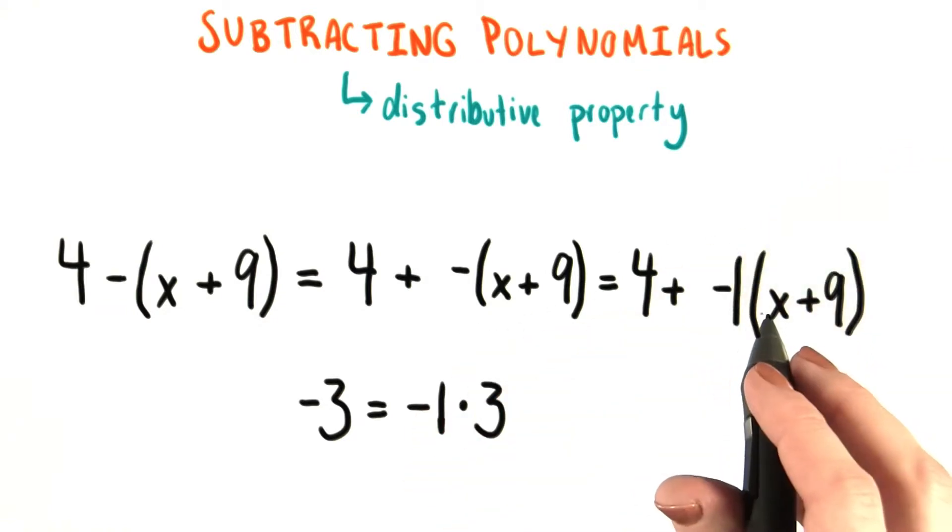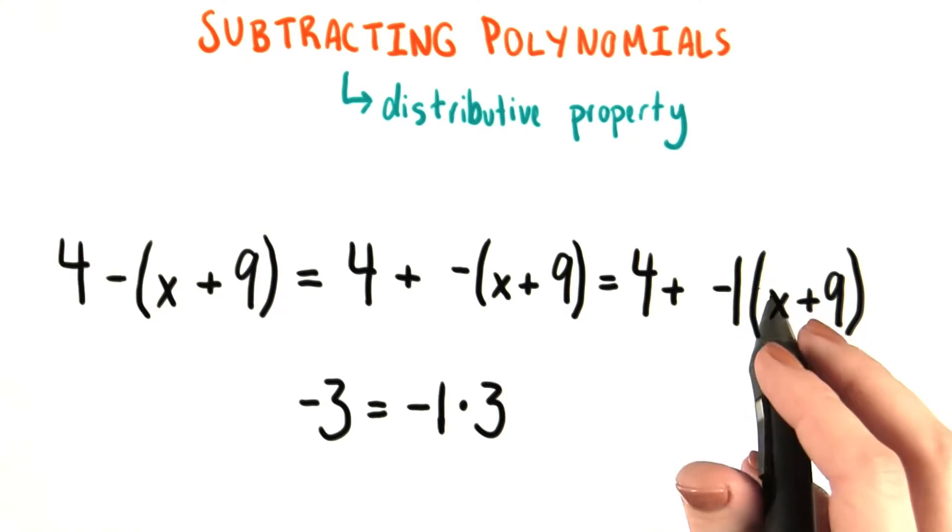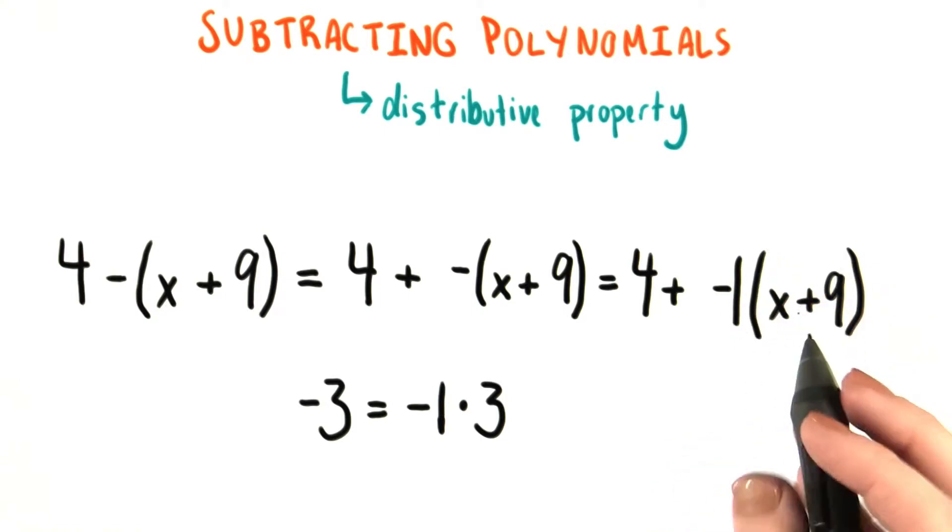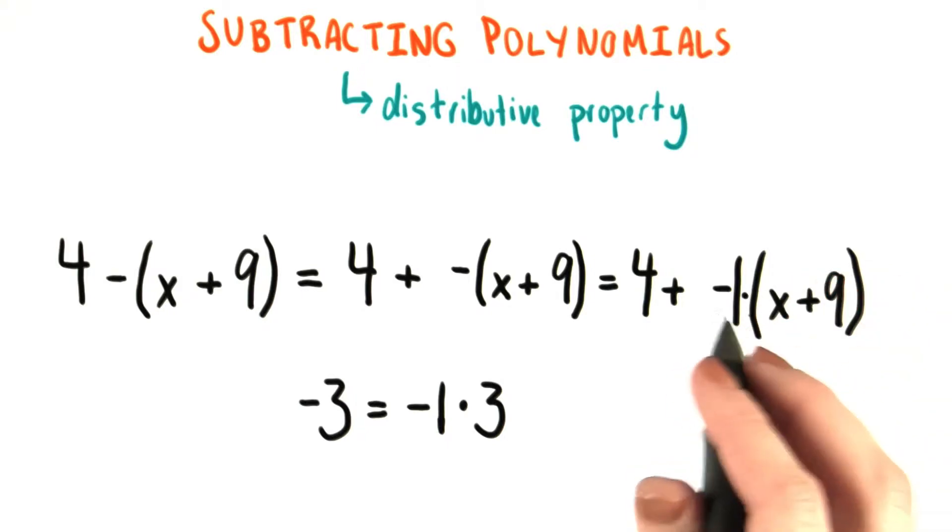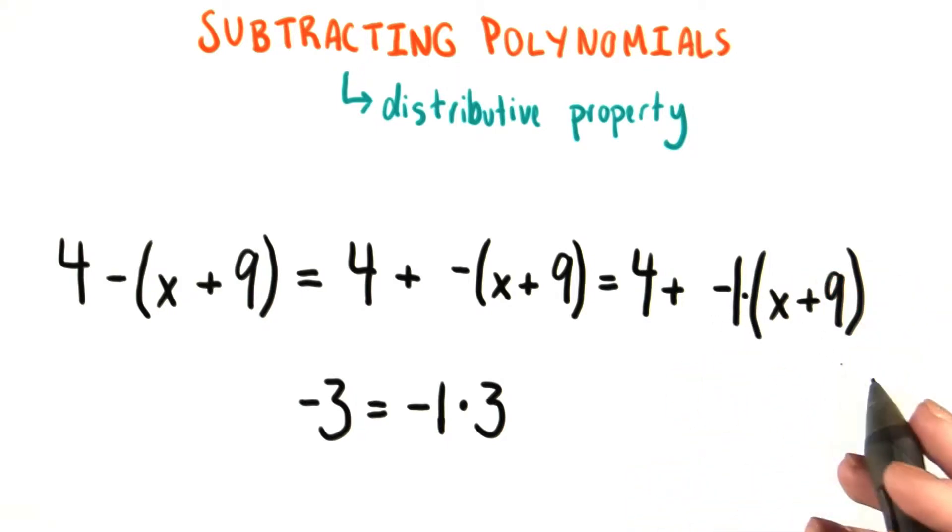You'll notice that I didn't write a multiplication sign between this coefficient, negative 1, and the parentheses that surround x plus 9. Because remember, there's an invisible multiplication sign implied between those when there's no space between them. So I'll just get rid of that.